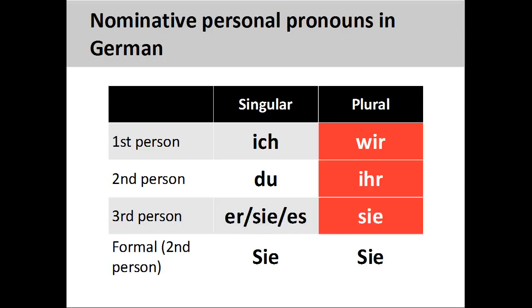The final group to appear on the stage is a group of actors that are separate from the first two groups. We would therefore refer to these actors as sie, they.